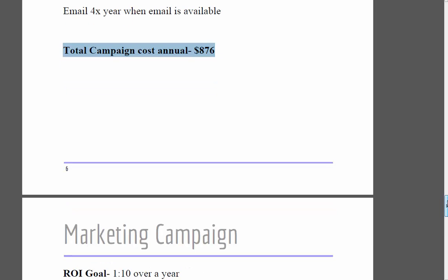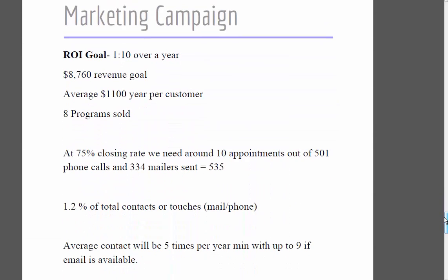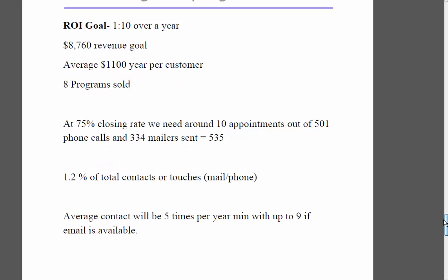The return on investment goal is one-to-ten over a year. If this campaign costs us $876, we want to generate at least $8,700 in revenue. There's a whole other layer around gross profit, but for this campaign I want to keep it simple — we just want at least $8,700 in revenue for the whole year.